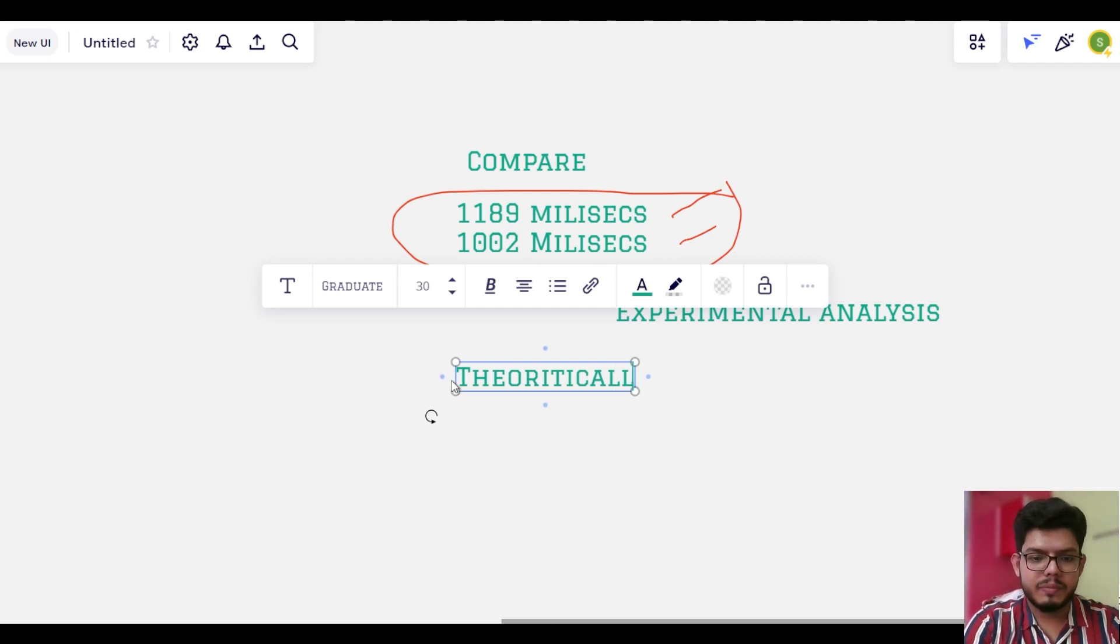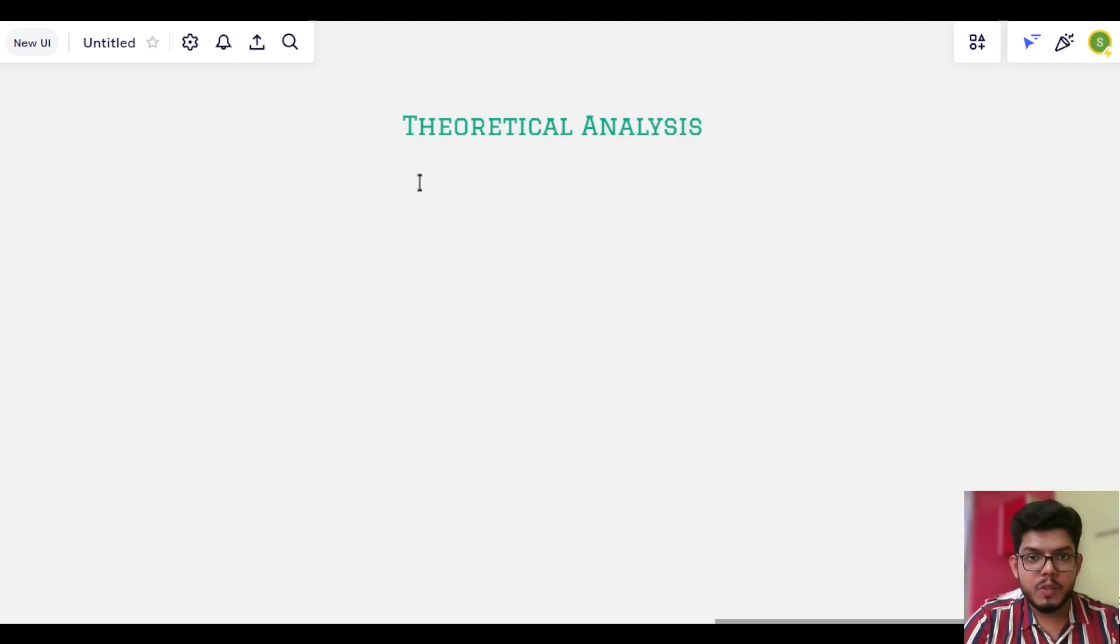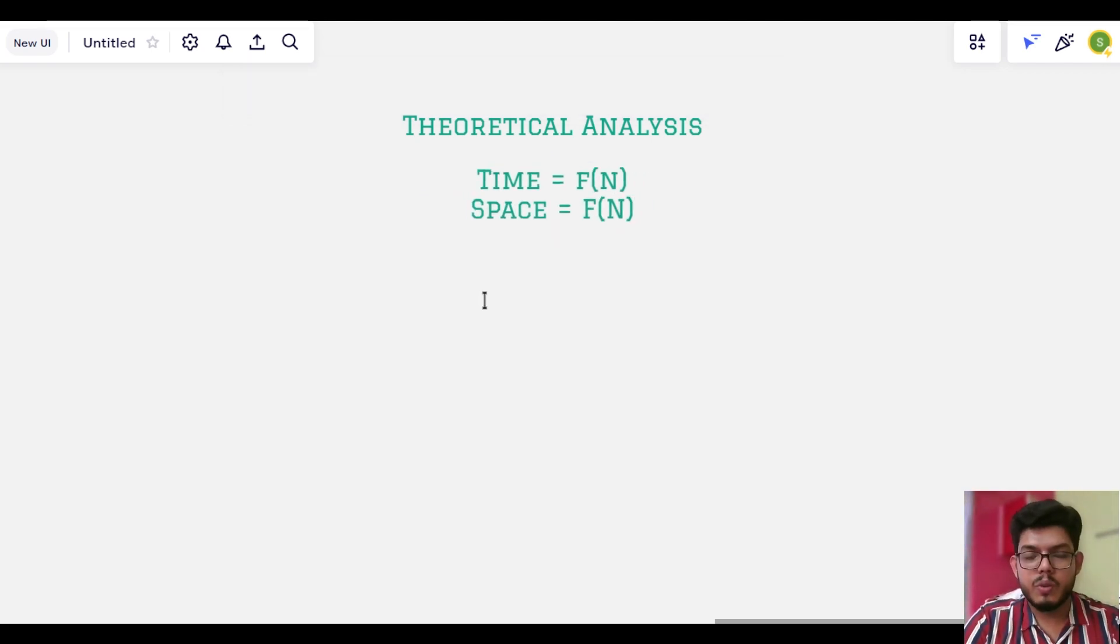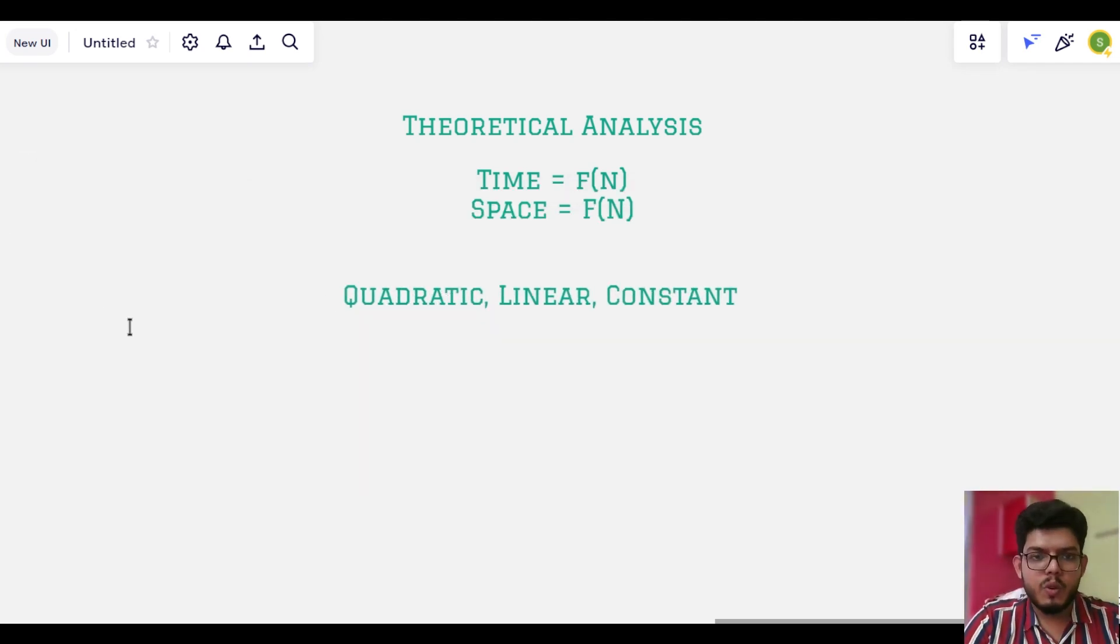So suppose we have an input size of n, this will actually tell us how much time is expected for the algorithm to run on an input size n. So in theoretical analysis, we are going to say that time is a function of input. Similarly, space is also a function of input. So now the functions can be quadratic functions, it can be linear functions, or maybe constant functions.